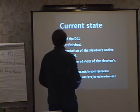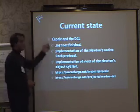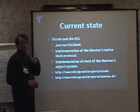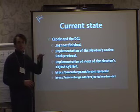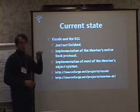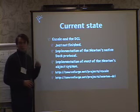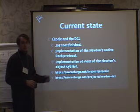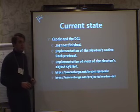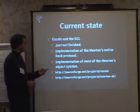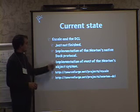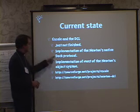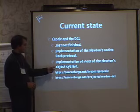There's something else I've been involved with: Scale and the DCL. It's not finished — at some point I succeeded in importing all the names from my Newton to the address book, but just the names: no phone numbers, no addresses, no email, and the birthdays were incorrectly imported. A lot of people in my address book appeared to be born in 2009.